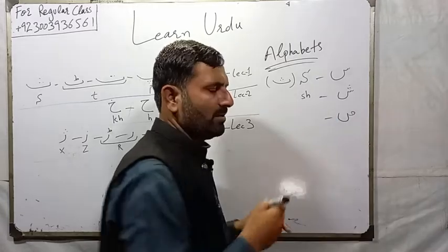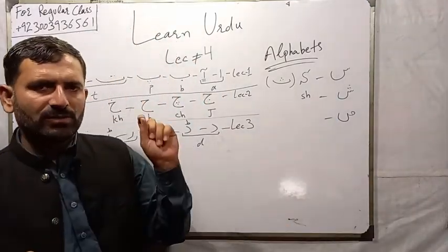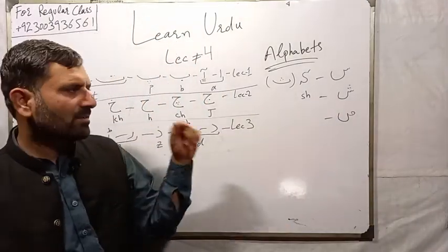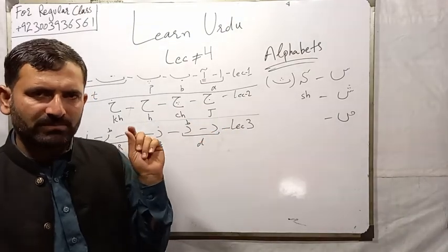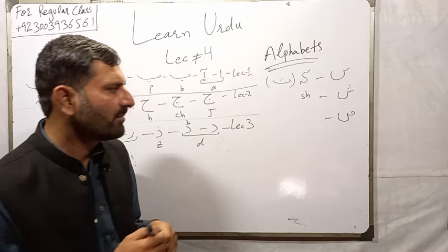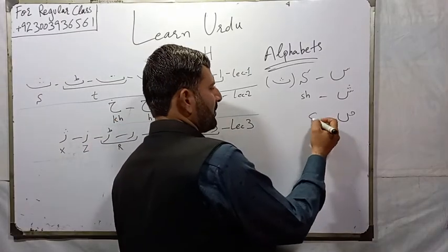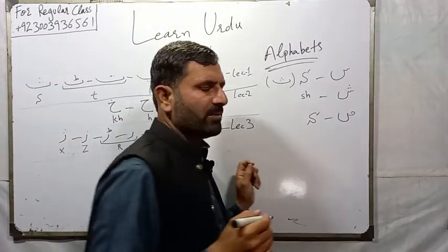Swad. In Urdu its name is Swad, sound as Sa. Say, Swad. It is also pronounced similar to S.